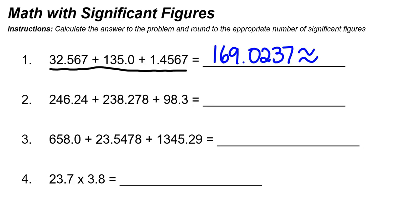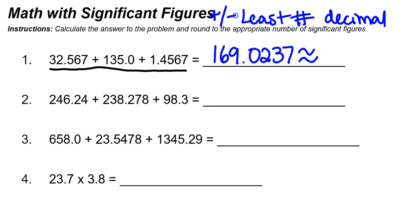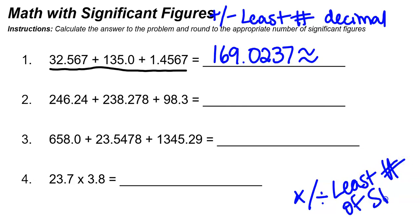We have two different rules for doing math with significant figures. One rule applies to addition and subtraction — it doesn't actually have to do with significant figures; we just look at the number of decimal places, and our answer should have the least number of decimal places. With multiplication and division, we're looking for the least number of significant figures. So either way, we are looking for the least number — either decimal places for addition and subtraction, or significant figures for multiplication and division.